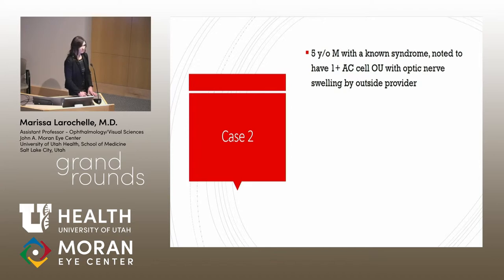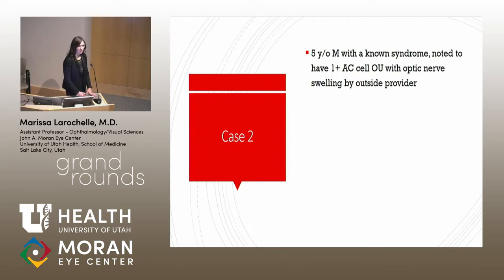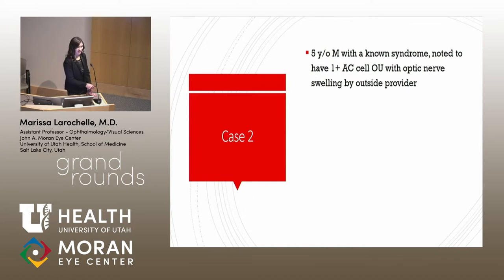Remember, when we call something idiopathic, that probably means we're the idiots. Our next case is a five-year-old with a known syndrome, which I'm withholding for the moment. He was also noted to have anterior chamber inflammation and optic nerve swelling, similar to our other patient. As per the SUN classification, that is anterior uveitis with optic nerve swelling, not pan-uveitis.